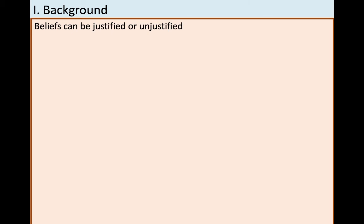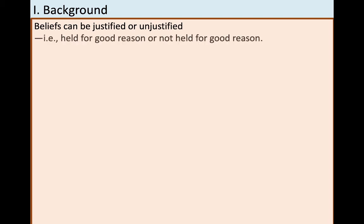So, with that aside out of the way — we can't rely just on our senses, and we'll talk more about that later — let's look at relations among beliefs, truth, and justification, and see how they all work together. First lesson: beliefs can be justified or unjustified. That is, you can have a good reason for your belief, or you can fail to have a good reason for your belief.